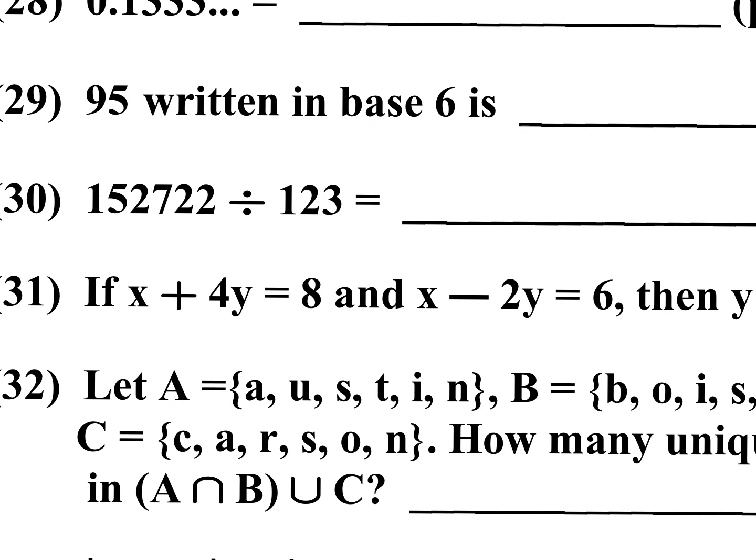Bonus problem B — Number 29: Write 95 in base 6. Divide 95 by 6 — remainder 5. Divide 15 by 6 — 2 remainder 3. Reading remainders gives the answer: 235 in base 6.